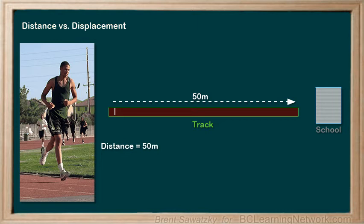Now let's talk about his displacement. We may decide that he starts moving down the track towards the school. So let's say that positive is the direction towards the school, which would mean that negative would be in the opposite direction, that is down the track away from the school. His displacement vector arrow is this.